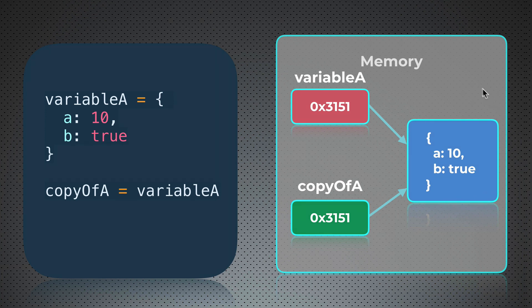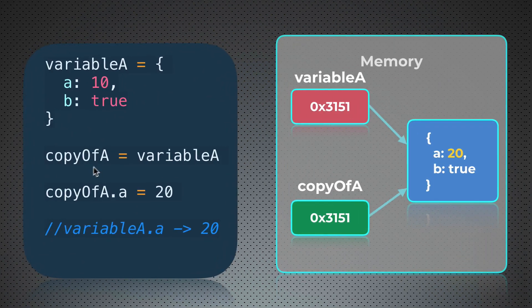And now let's see what will happen if I will try to change this value in the memory. I can do that in such way: copyOfA.a equal to 20. Please don't focus on the syntax now. Purpose of this example is to show you what happens in the memory when you perform actions with values of reference type, that is object.